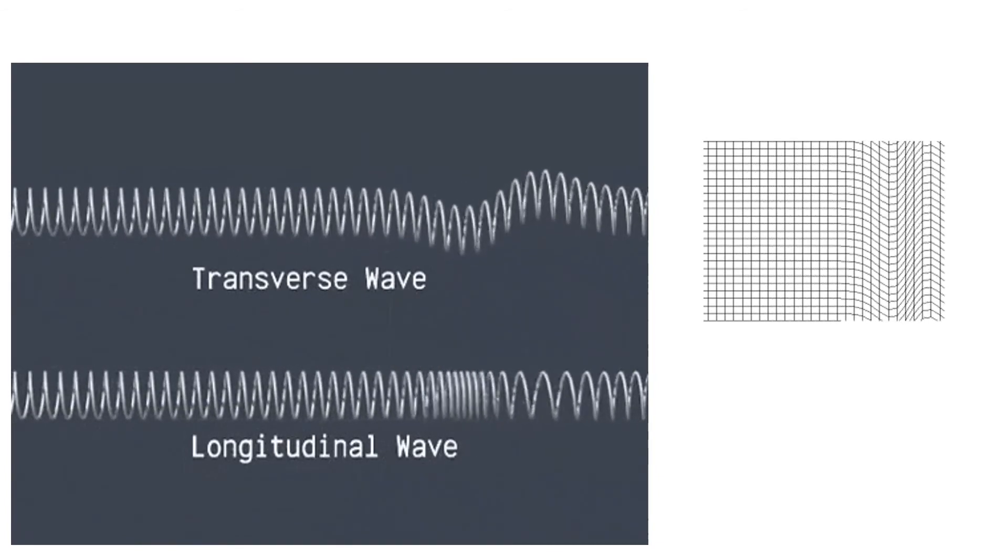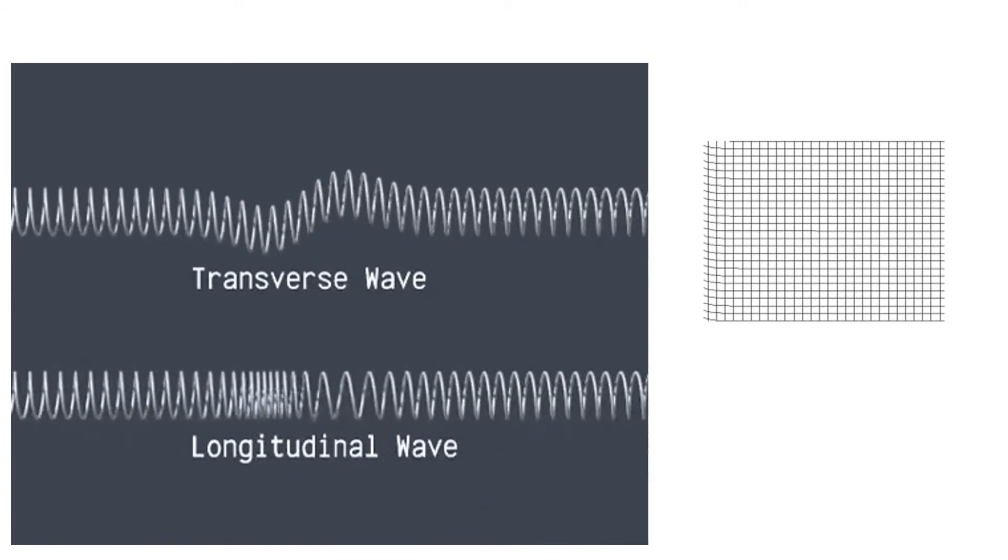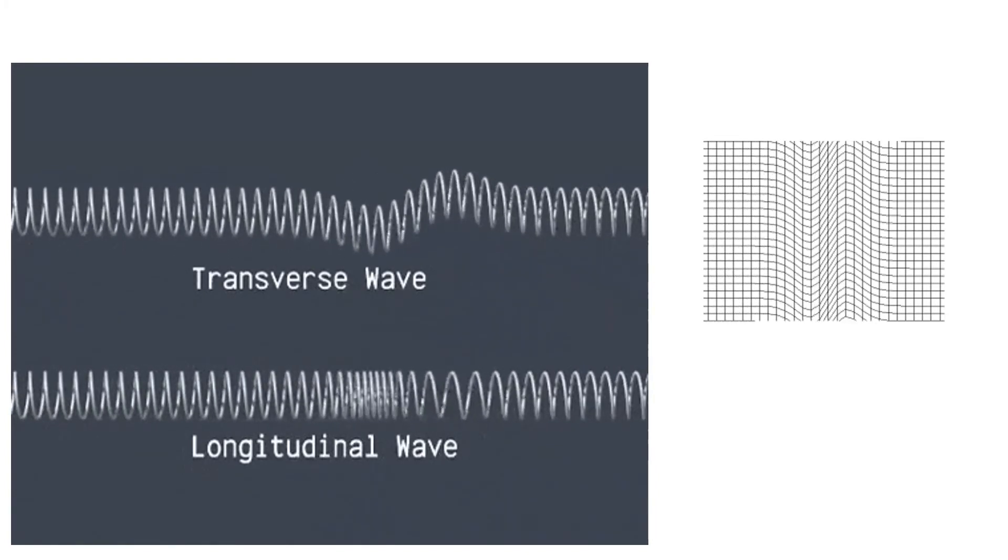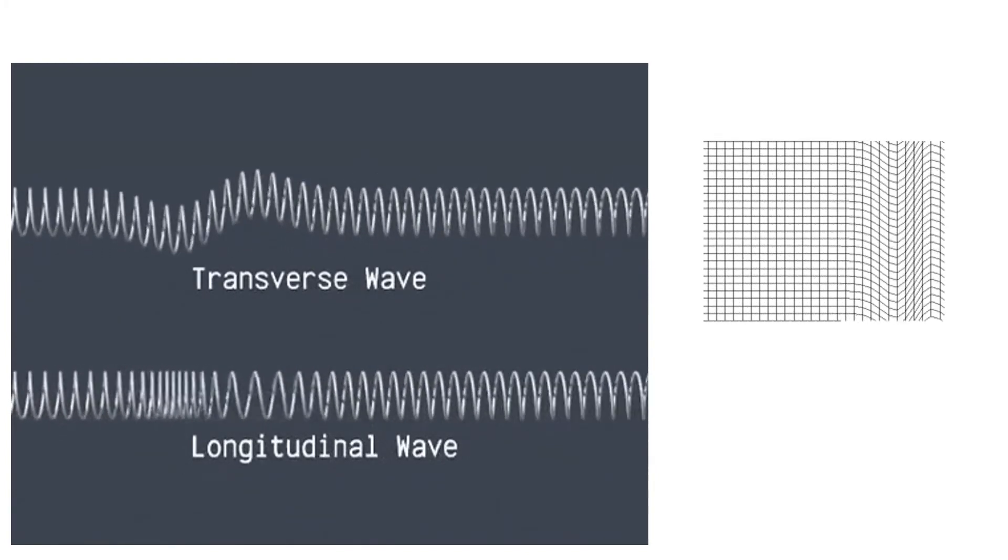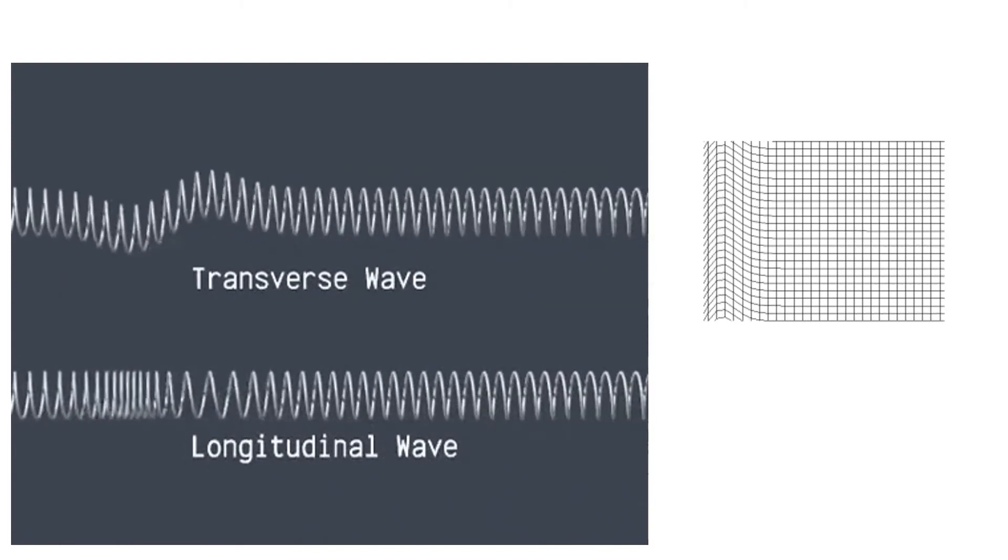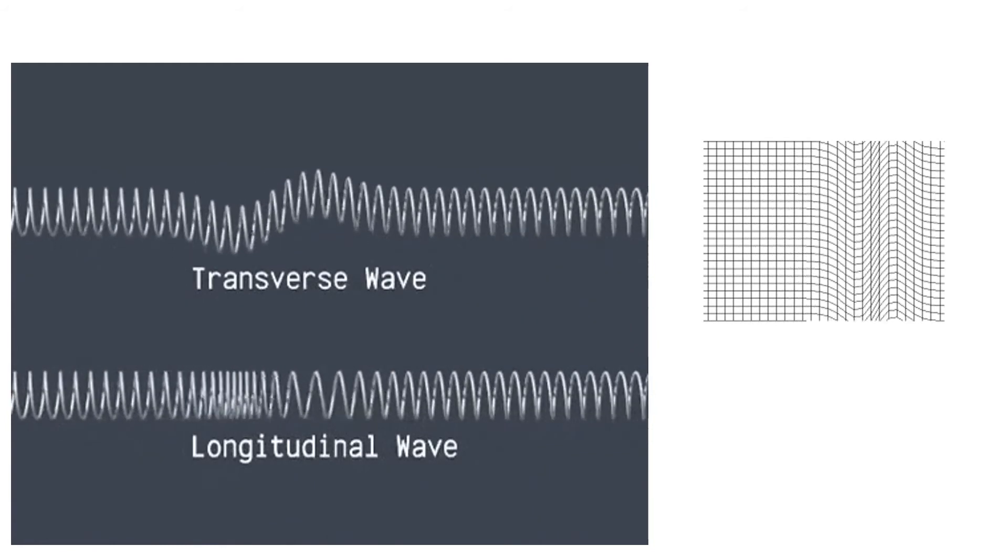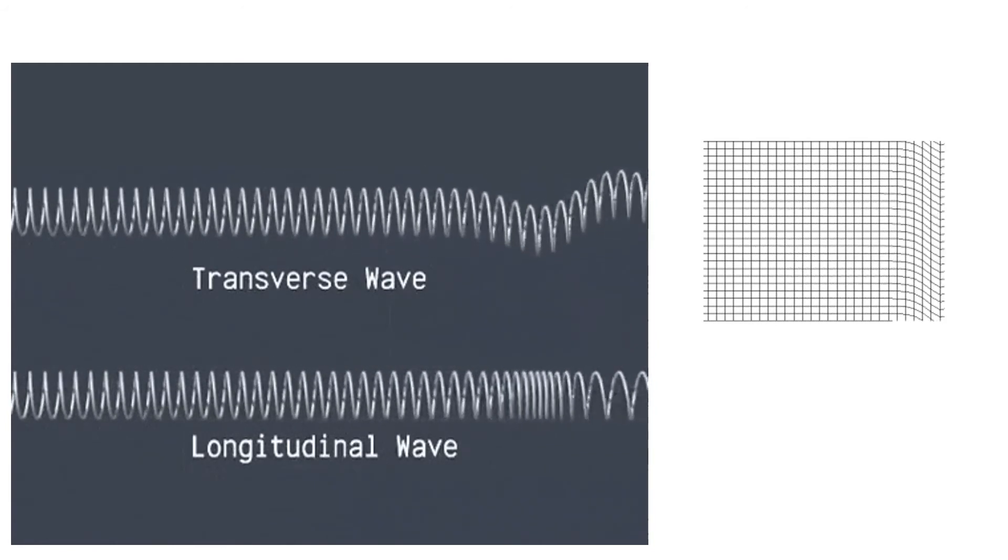You'll notice here a transverse wave versus a longitudinal wave. How are they different? The transverse wave is moving at a right angle—the crest and trough moving at a right angle compared to the medium. Longitudinal, it's moving long ways, so to speak.